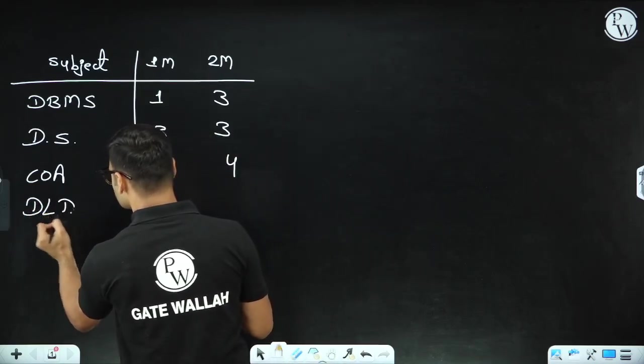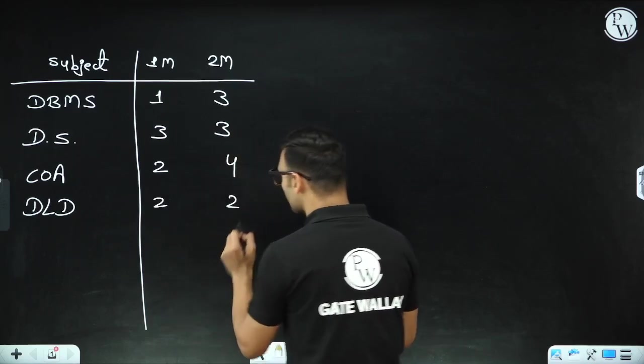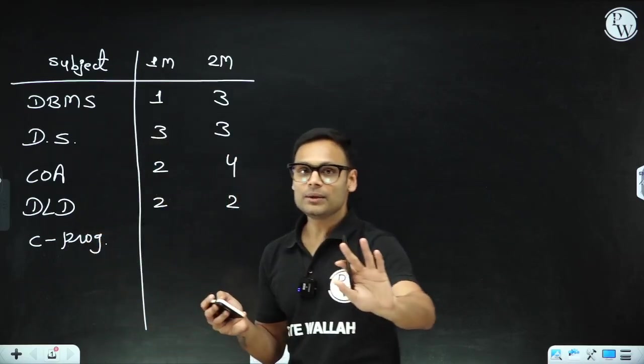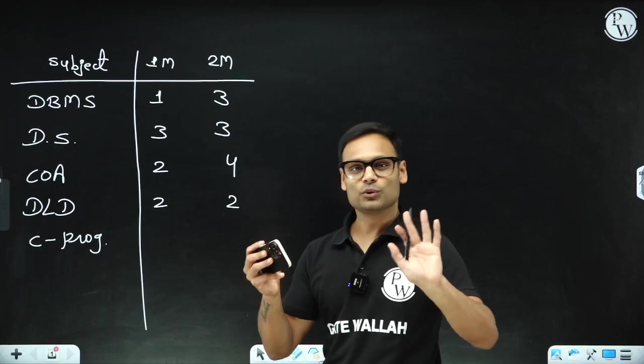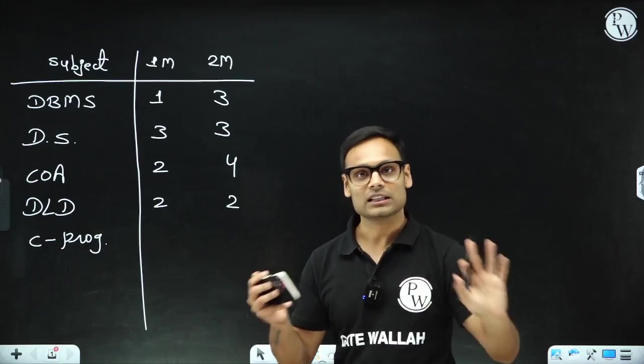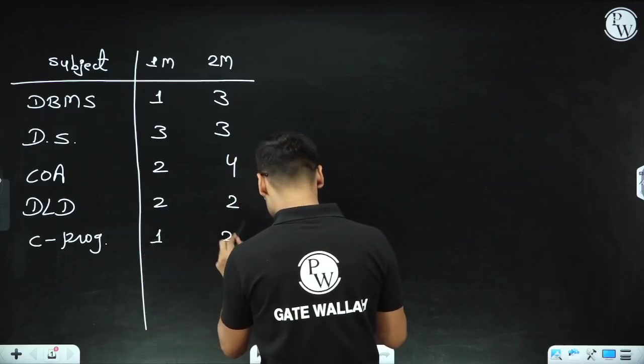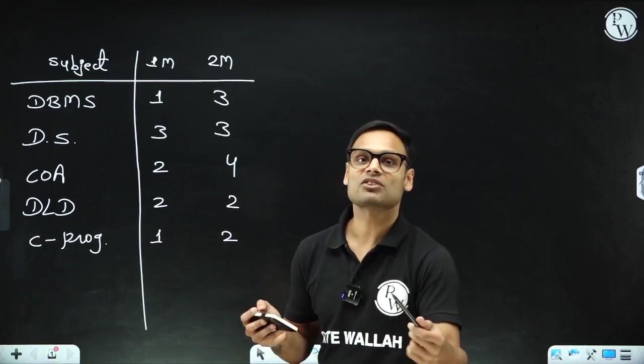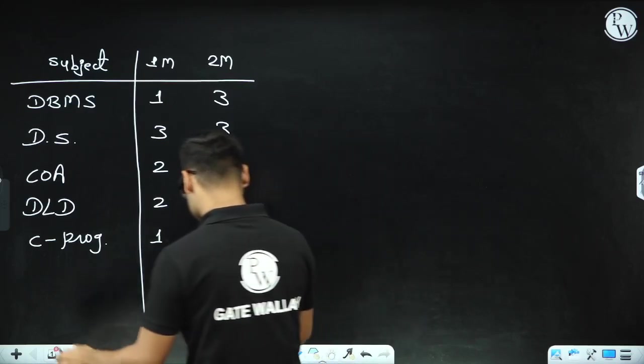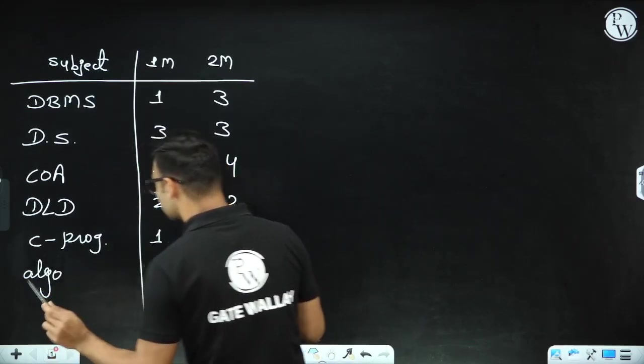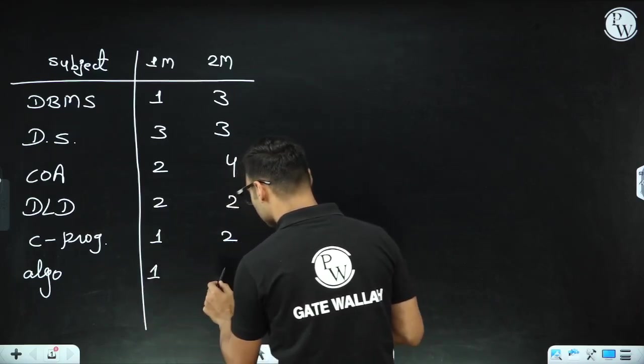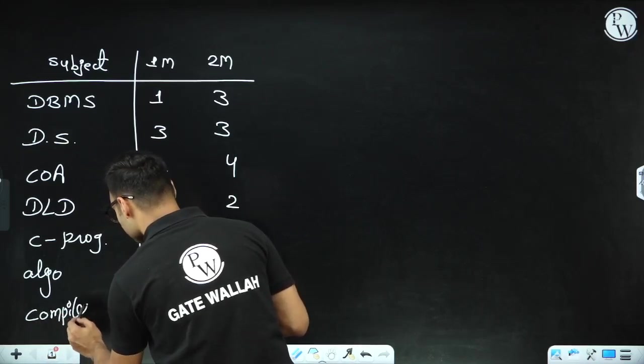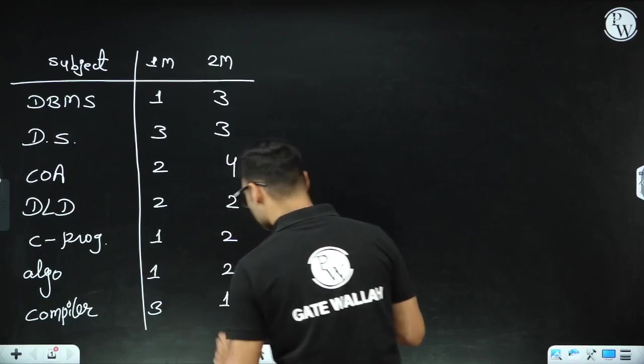Digital Logic Design had two one-mark and two two-mark questions - four questions total. C Programming questions were a little lengthy but not tough at all. With three hours, you can easily solve 65 questions if you know the concepts. Based on the information I've received, hardly one or two questions, maximum five questions, took extra time. Apart from that, most questions were from the standard topics. Algorithm had one one-mark and two two-mark questions. Compiler Design had three one-mark and one two-mark question - four questions from Compiler.